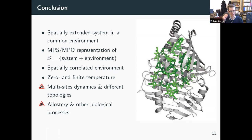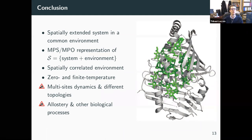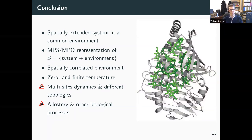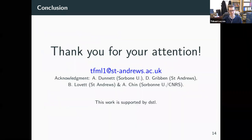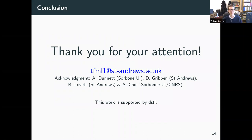To sum up: we have a spatially extended system where different sites are in a common environment. We are able to do a matrix product state representation of this system and environment via chain mapping. When we do that, we see a spatially correlated environment where different parts of the environment interact mostly with different parts of the chain. We can see non-Markovian memory effects traceable to this transfer of population, both at zero and finite temperature. What we are working on at the moment is multi-site dynamics with different topologies, and trying to see if this could be applied to other biological systems where quantum effects are hypothesized to play a role, such as allosteric proteins. Thank you very much for your attention and I look forward to your questions.